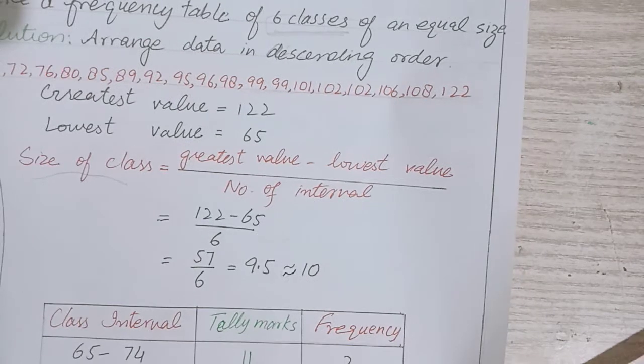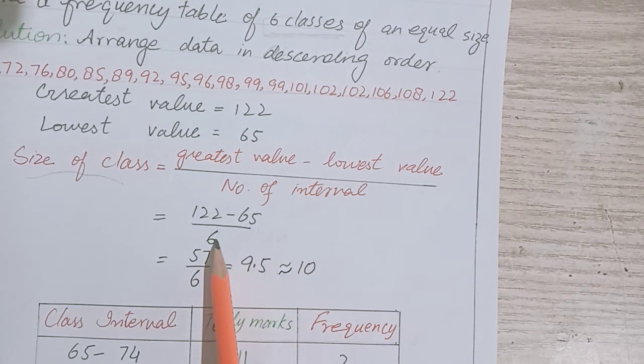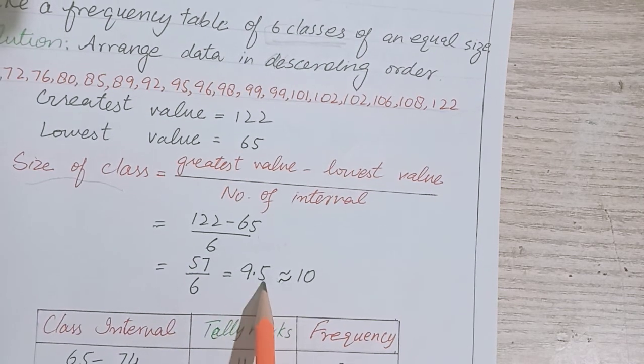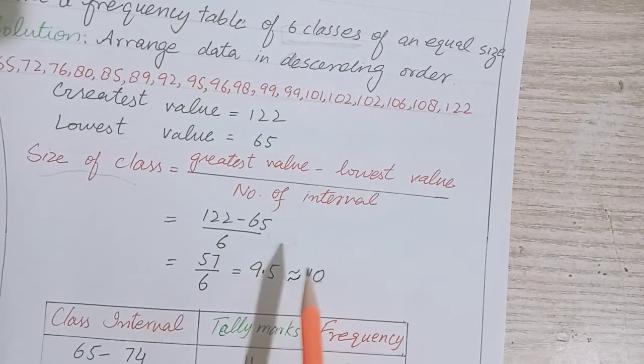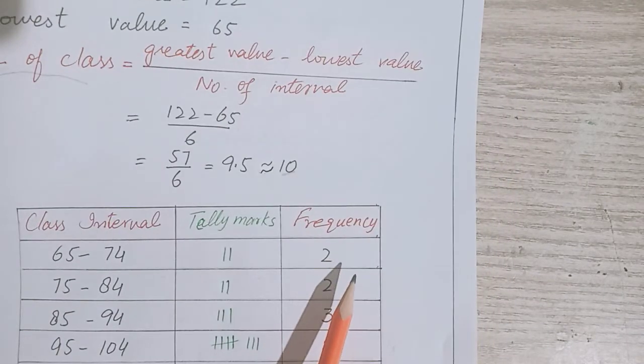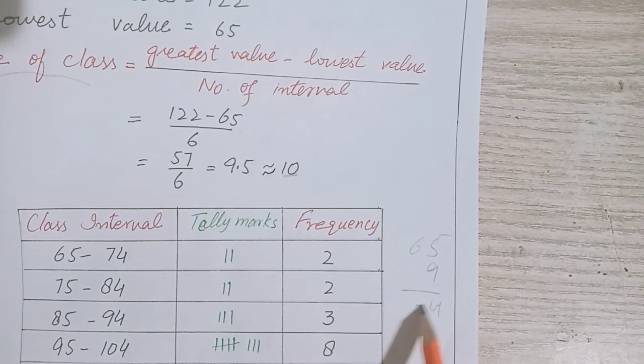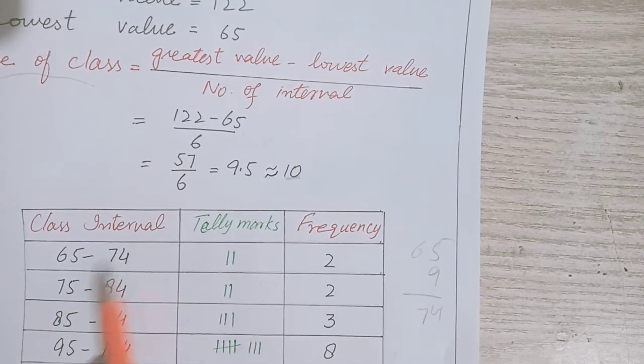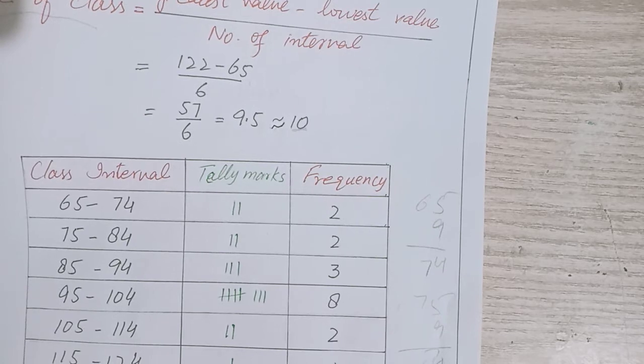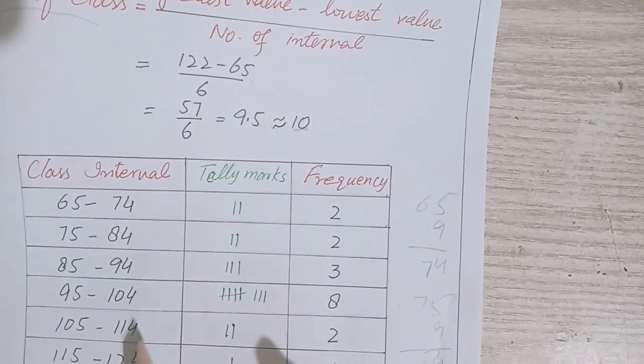Using the formula: 122 minus 65 is the range, divided by number of classes 6. We have 57 divided by 6, which gives 9.5. The approximate answer is 10. Now the starting number is 65, and our class interval is 10, so we add 9 to get 74. Next class is 75 to 84, and so on.